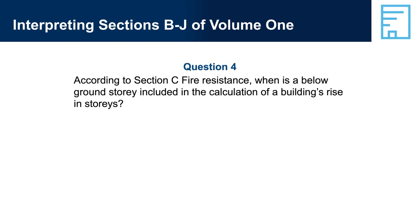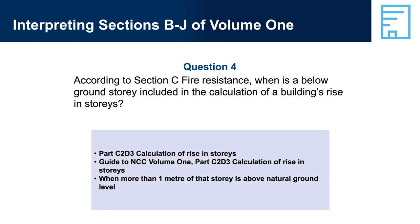Question 4: According to Section C, fire resistance, when is the below-ground story included in the calculation of a building's rise in stories? Part C2-D3, calculation of rise in stories. Guide to NCC Volume 1, Part C2-D3, calculation of rise in stories. A below-ground story is included when more than one metre of that story is above natural ground level.